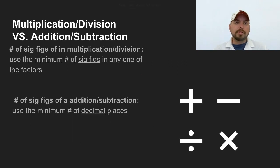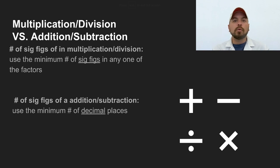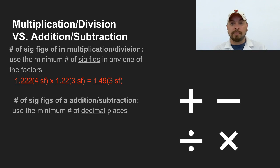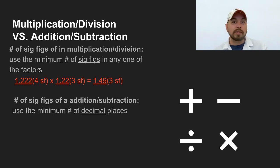A couple of rules when it comes to mathematical functions with sig figs. When you are multiplying and dividing, you find the number within the function that has the fewest number of significant figures, and that's the number of figures you report in the answer. So 1.222 times 1.22 gives a final answer reported to three sig figs, because 1.22 has three sig figs while 1.222 has four. So our answer is 1.49 — three sig figs — because within the function, the fewest number of sig figs was three. That applies to any multiplication or division process.